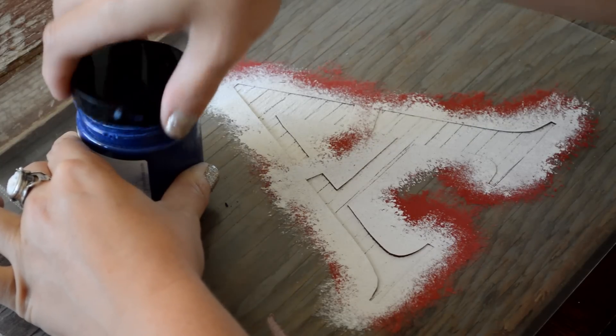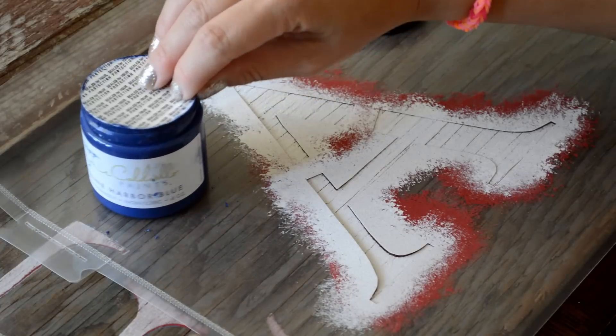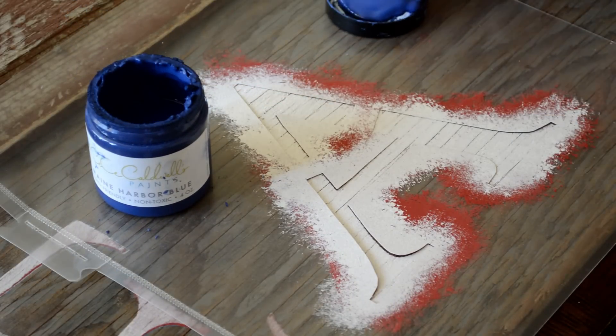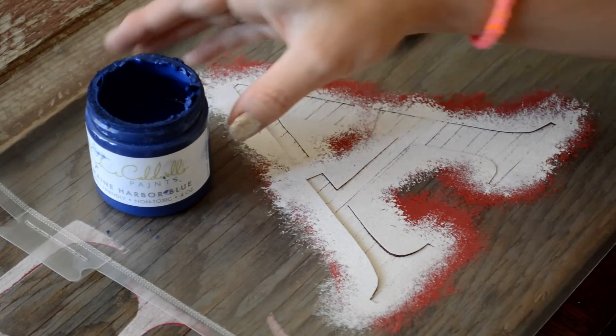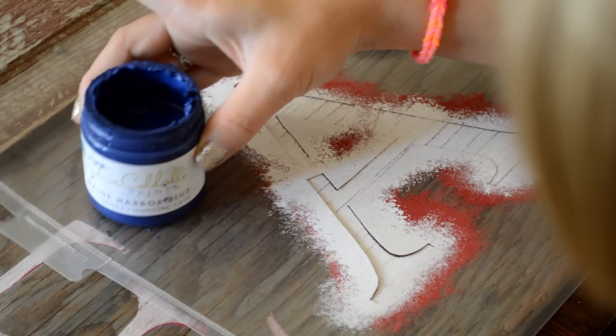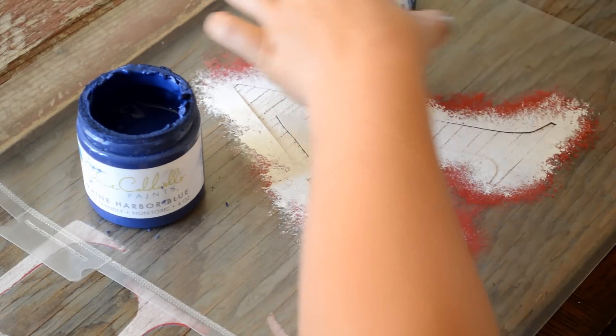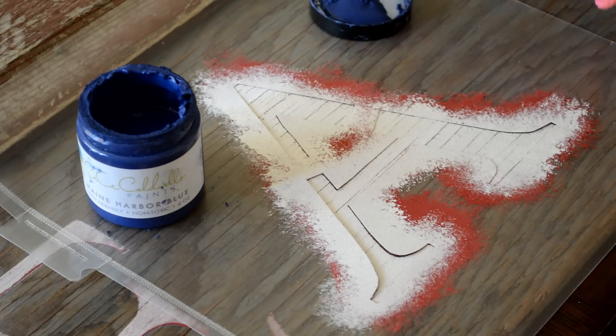Alright, for my next color over the white, it's going to be Maine Harbor Blue from the CC Caldwell Paint Company. I really love CC Caldwell's paints. They're really nice, so if you ever get a chance to purchase some of these, you should do it because you will be amazed.